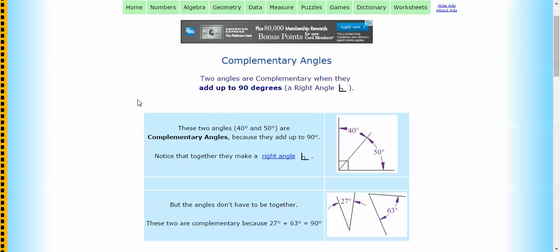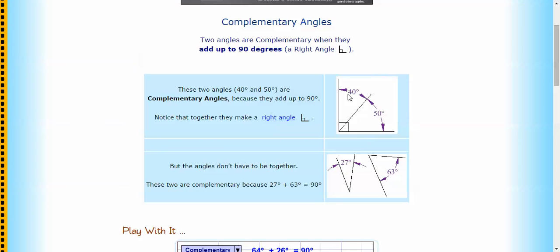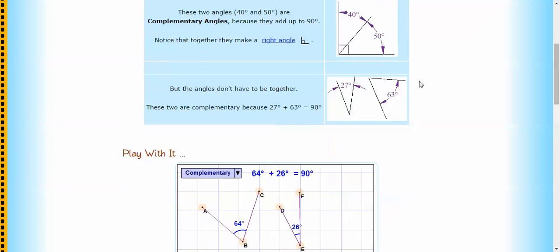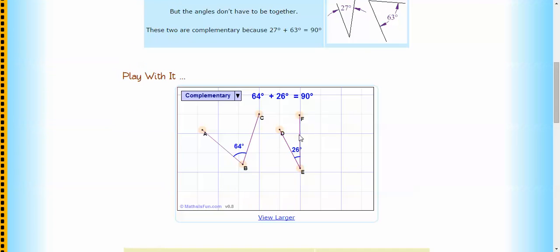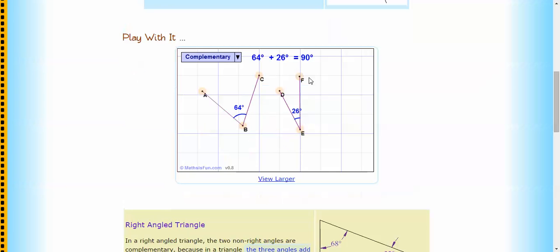Complementary angles are just two angles that add up to 90 degrees. So they make a right angle. And as you can see here on this diagram, you've got 40 degrees and 50 degrees and together they're complementary. So you're just adding them up and seeing if they make 90.